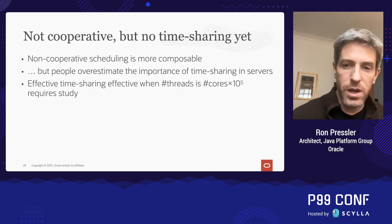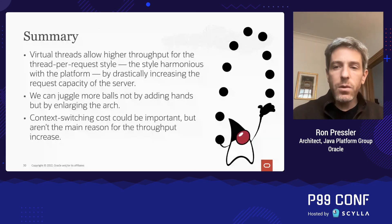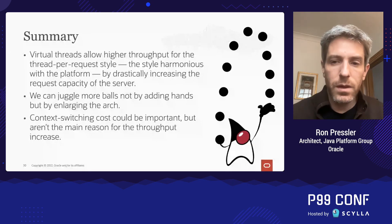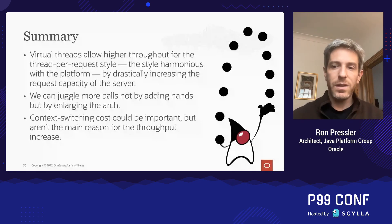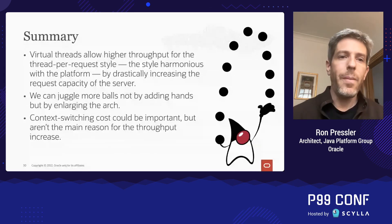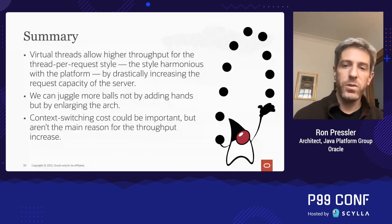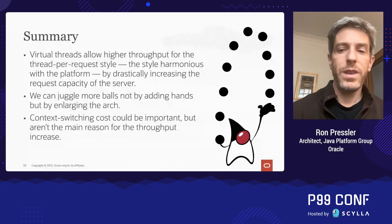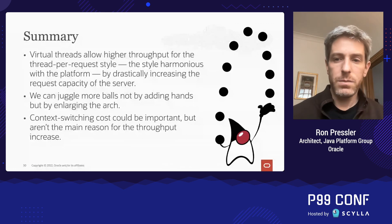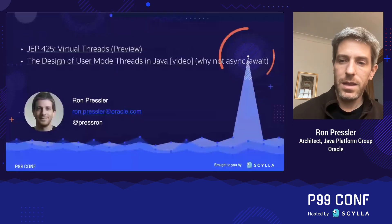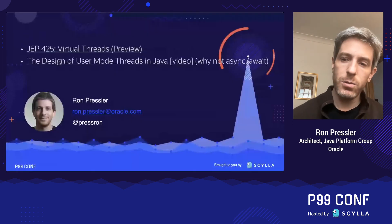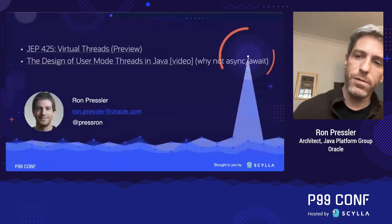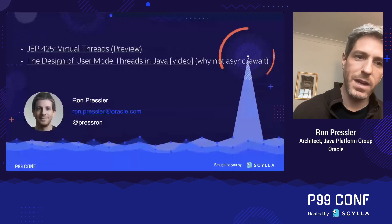In summary, the main quality that gives user-mode threads their performance is not fast context switching, but their multitude. Thank you.